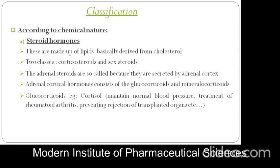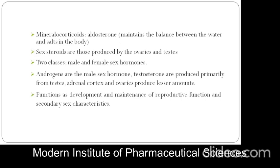Glucocorticoids — such as cortisol — maintain normal blood pressure, are used in treatment of rheumatoid arthritis, and help in preventing rejection of transplanted organs. Mineralocorticoids — for example, aldosterone — maintain the balance between water and salt in the body. Aldosterone is mainly secreted in the renal tubules of the kidneys.